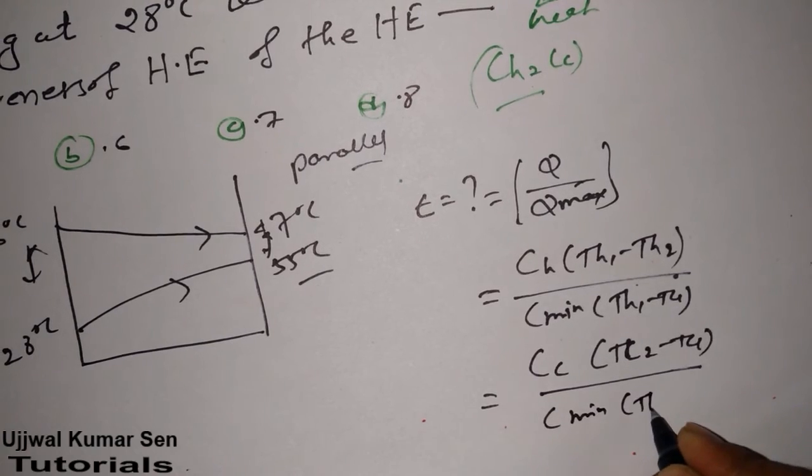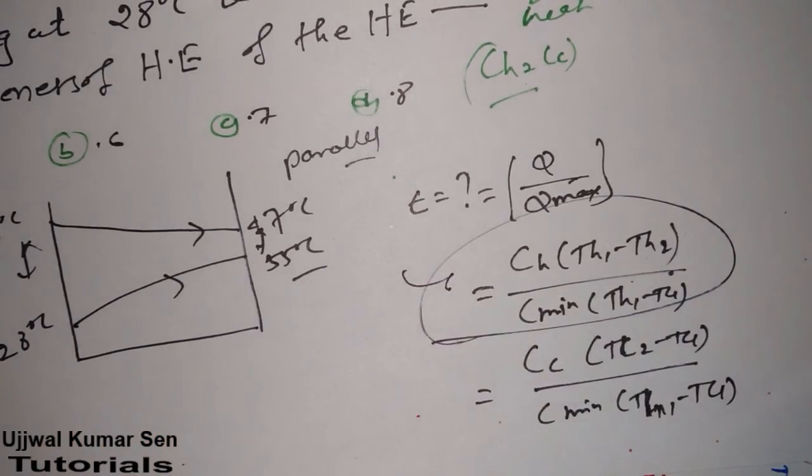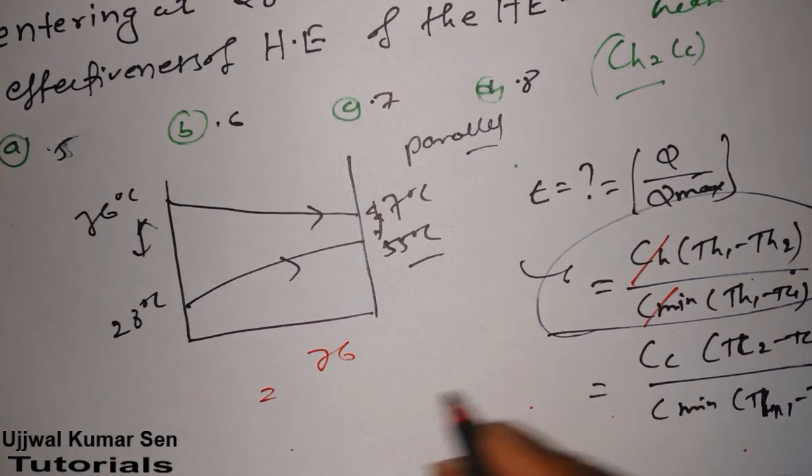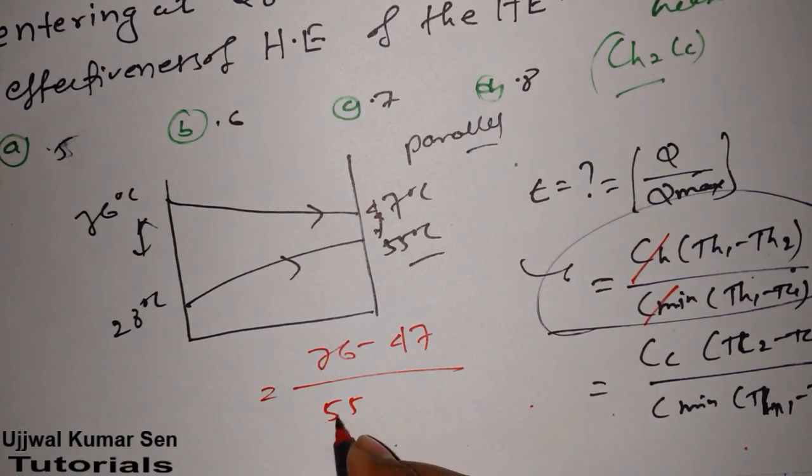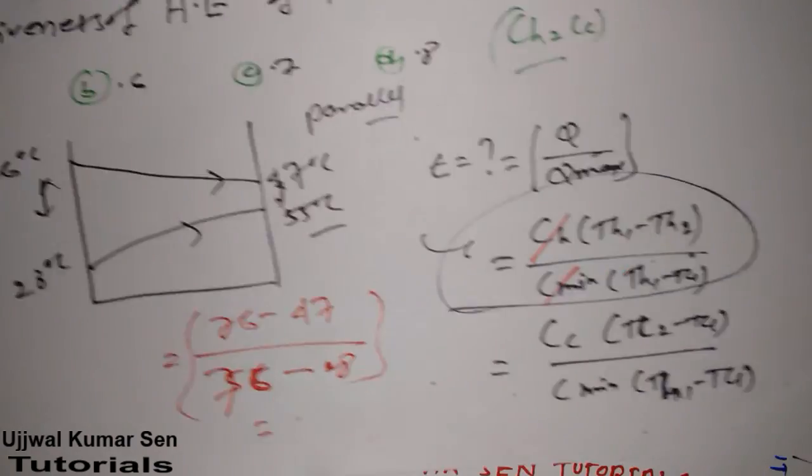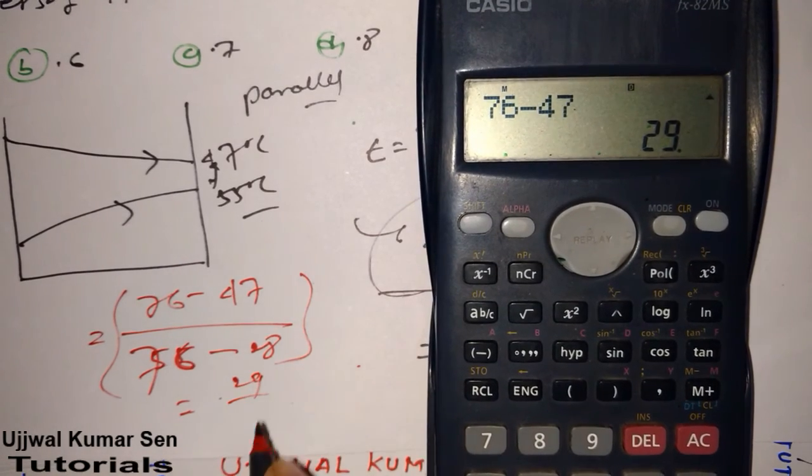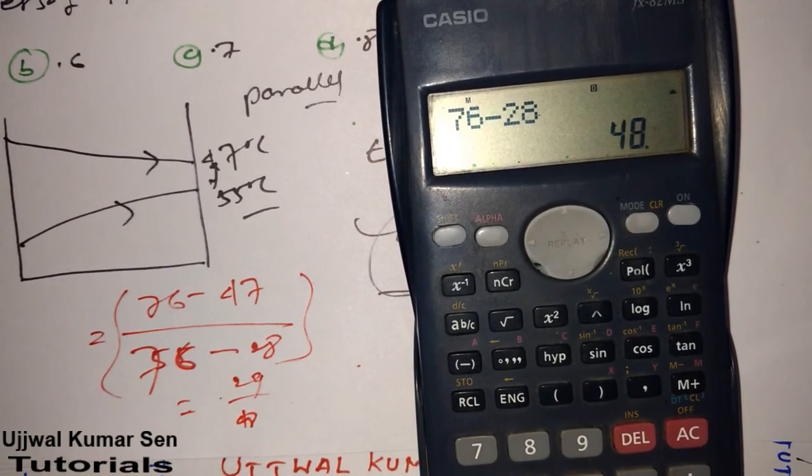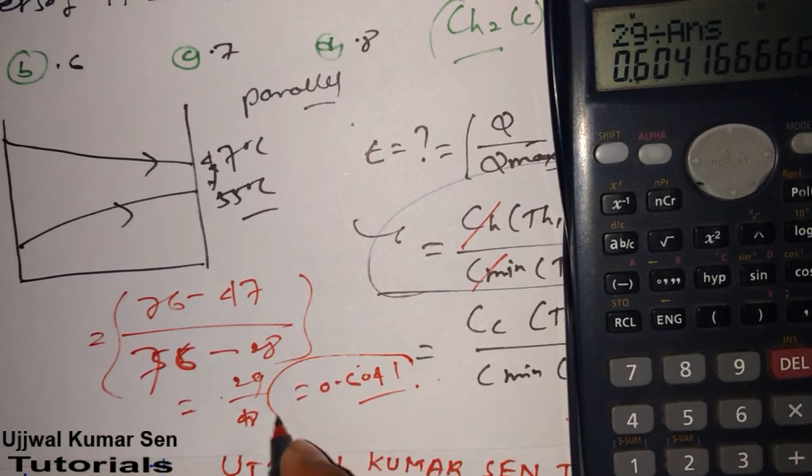C minimum - we can use anyone. Let's use this first one. This gets cancelled because both are same. What is TH1? 76. What is TH2? 47. This is TH1 minus TC1, which is 28. Now use calculator and find out the answer. It's 29 divided by 76 minus 28, equals 48. So 29 divided by 48 equals 0.6041. This is the effectiveness of the heat exchanger.